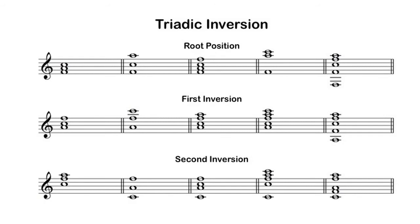We frequently indicate the inversion of a triad using a set of numbers called figured bass symbols. These symbols derive from a notational practice common in the 17th and 18th centuries, when composers would often write only a melody and bass line and use numbers below the pitches in the bass to indicate how the musician should fill in the inner voices of the harmonies.